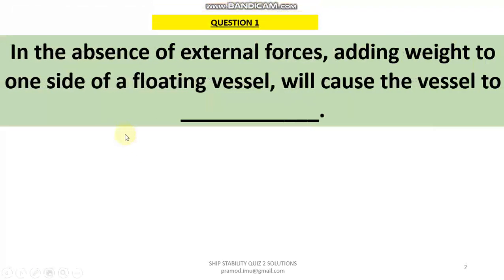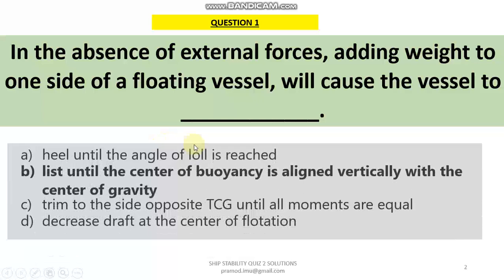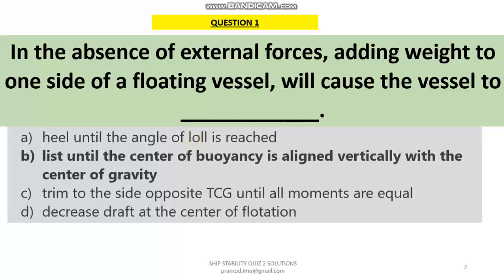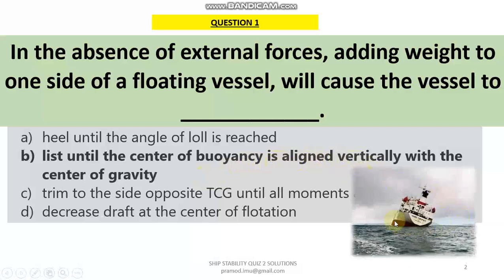Question number 1: In the absence of external forces, adding weight to one side of a floating vessel will cause the vessel to list. The answer is B — the vessel will list until the centre of buoyancy comes back in alignment with the centre of gravity. When we add weight disproportionately to one side, that will cause the vessel to list.